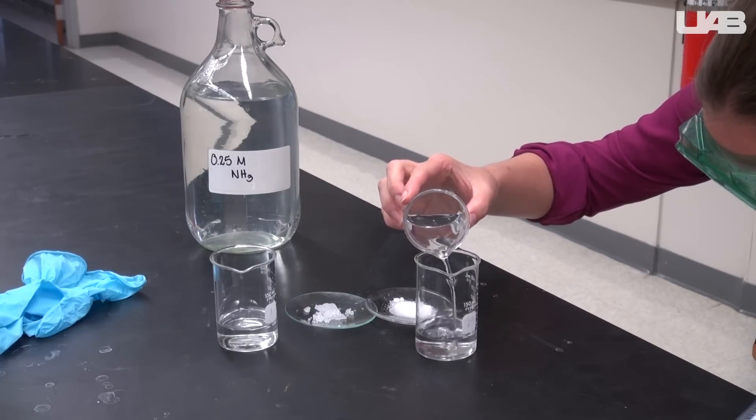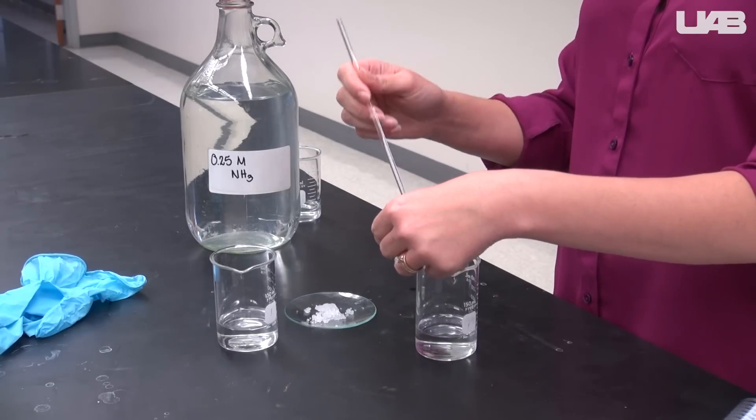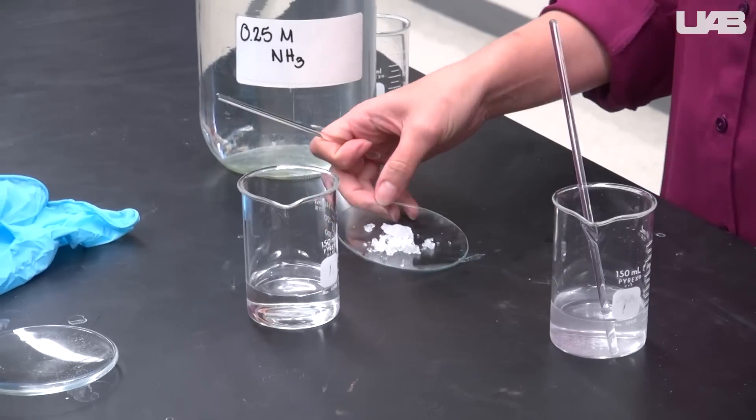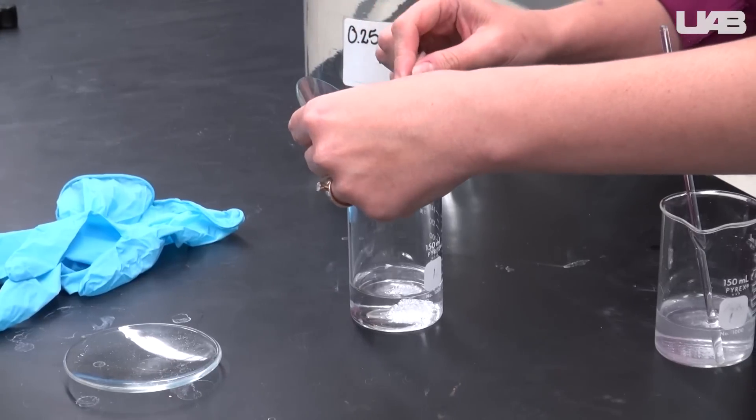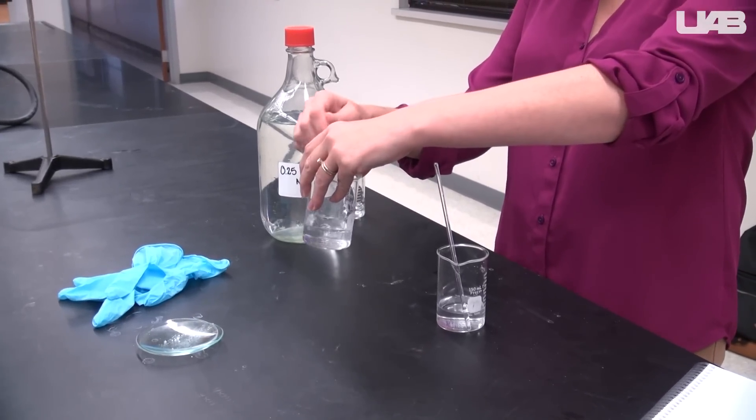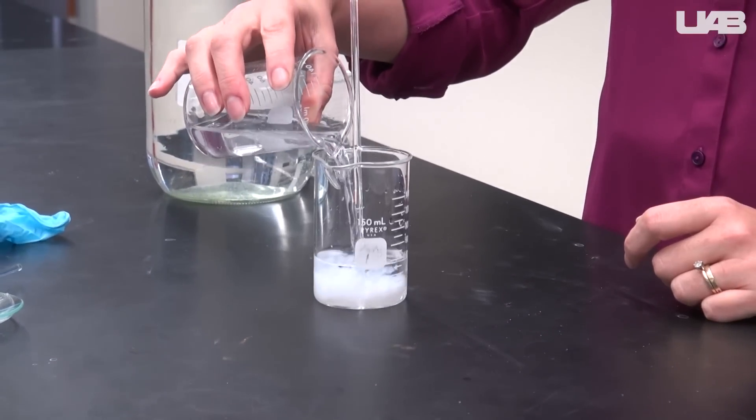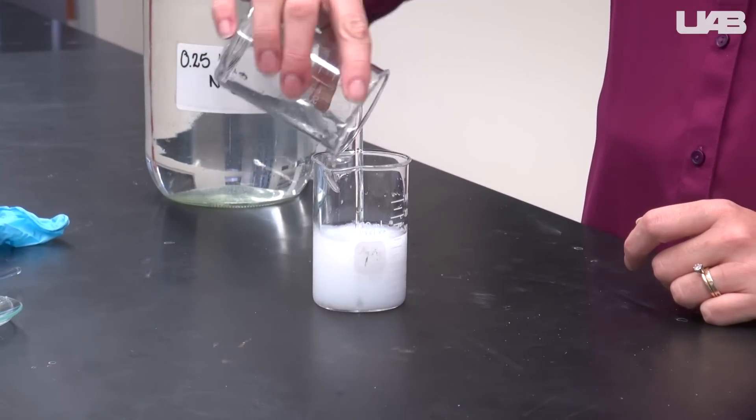Pour half of the ammonia in one beaker and use it to dissolve the di-ammonium hydrogen phosphate. Pour the other half of the ammonia in another beaker and use it to dissolve the calcium nitrate. Once both solids are completely dissolved, mix the contents of both beakers together. A precipitate will form.